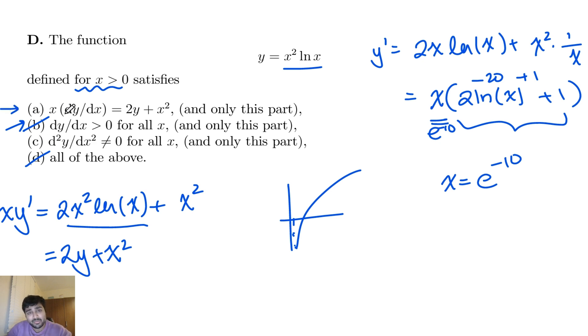But let's just quickly check anyway that the second derivative isn't 0 for all x. Let's just differentiate this again. And well, actually, it's almost obvious, because if the second derivative was 0 for all x, that would mean that y is a linear function. But if that doesn't convince you, let's just differentiate it again.